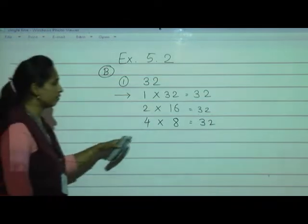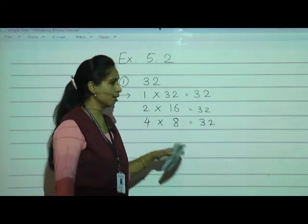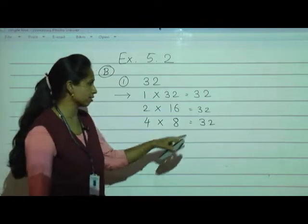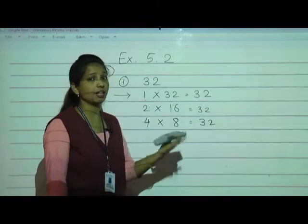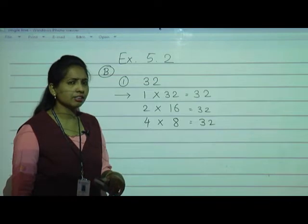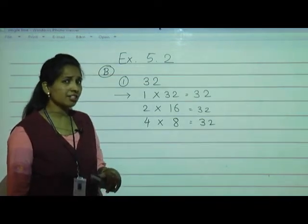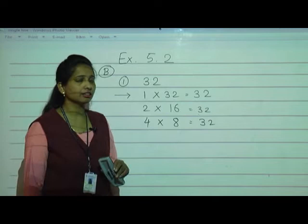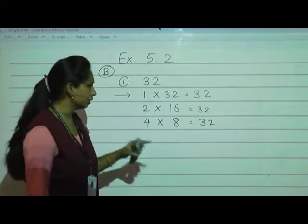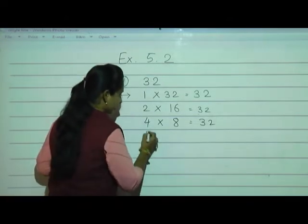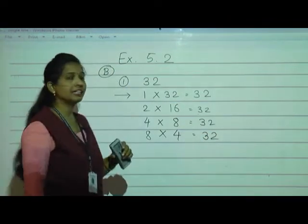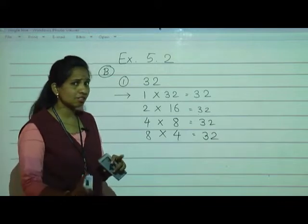What about 5? In the 5 table, 32 is not there — 35 is there. What about the 6 table? 6 fives are 30, 6 sixes are 36, so 32 is not there. What about 7? 7 fours are 28, 7 fives are 35 — so it is not there. What about 8? In the 8 table, 32 is there: 8 fours are 32.